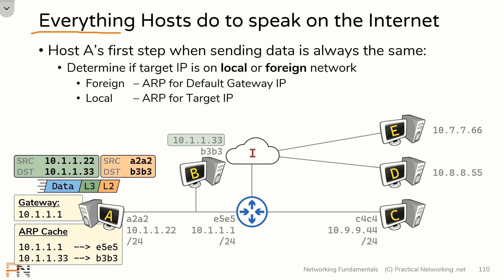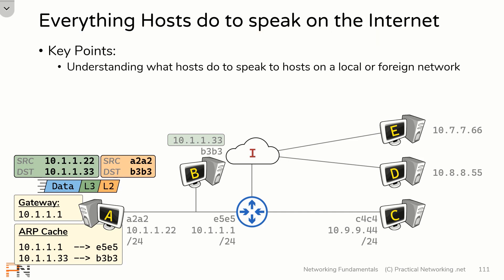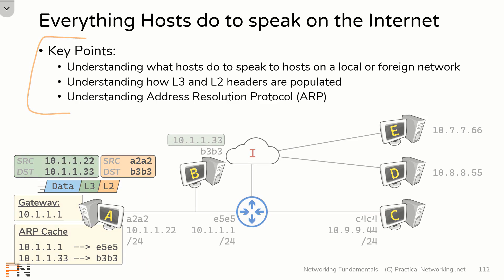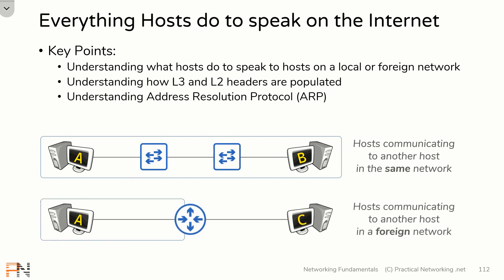That wraps up our lesson on everything hosts do to speak on the internet. The key points of this lesson were understanding what hosts do when speaking to other hosts on a local network versus a foreign network, understanding how the layer 3 and layer 2 headers are populated to get the data to the other host, and understanding ARP's role in this entire process. If you understand these three key points, you now know everything hosts do to communicate with other hosts in the same network and everything hosts do to communicate to other hosts in foreign networks, regardless of how they are connected.